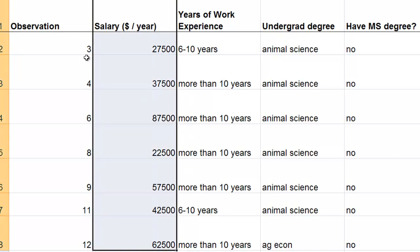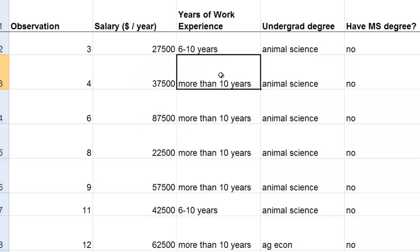That histogram will tell you about the variability of salaries for people with no Master's degree, more than five years of work experience, and with animal science, ag econ, or agronomy undergrad degrees.